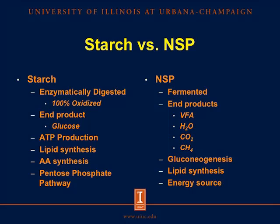To recap starch versus non-starch polysaccharides: starch is enzymatically digested by the pig's endogenous enzymes, so it is 100% oxidized to glucose — a very efficient process. Glucose is readily absorbed and can be utilized for ATP production, lipid synthesis, amino acid synthesis, and generating reducing equivalents through the pentose phosphate pathway. Whereas NSP are not enzymatically digested but fermented, and the end products are volatile fatty acids, which can be used for gluconeogenesis, lipid synthesis, and as an energy source to the colonocytes. But fermentation also produces water, carbon dioxide exhaled through the lungs, and methane, which result in energy losses. Therefore, NSP are a less efficient means of obtaining energy compared with starch.